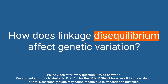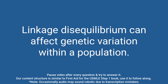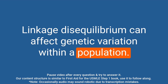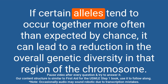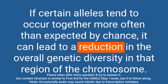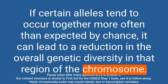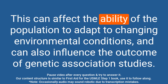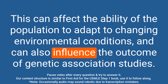Question: How does linkage disequilibrium affect genetic variation? Answer: Linkage disequilibrium can affect genetic variation within a population. If certain alleles tend to occur together more often than expected by chance, it can lead to a reduction in overall genetic diversity in that region of the chromosome. This can affect the ability of the population to adapt to changing environmental conditions and can also influence the outcome of genetic association studies.